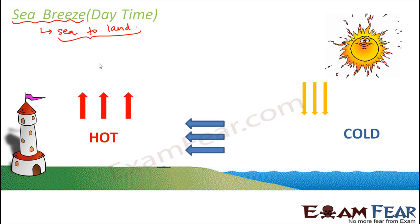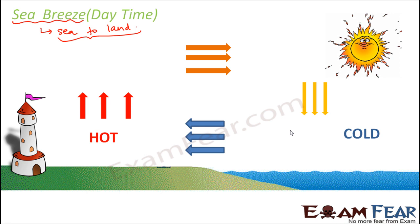This entire cycle continues — the warm air that rose took up the space of the already existing cold air, which then came back. The same cold air gets heated up during daytime in the presence of sunlight, rises up, moves towards the ocean, and the process continues. Basically, the warm air rises and the cold air from the sea flows towards the land to take the space emptied by the warm air. As a result, a cool wind blows from the sea towards the land during daytime — this is the sea breeze.